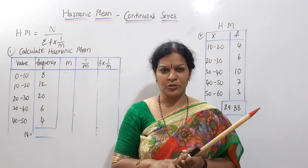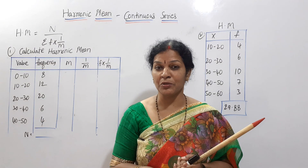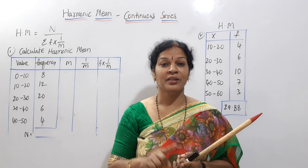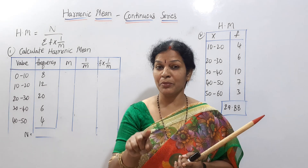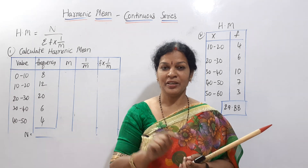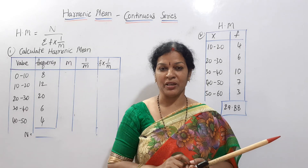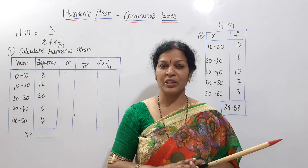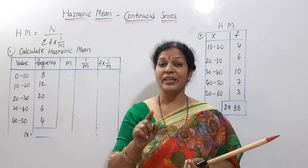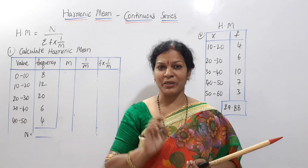In the individual series, the harmonic mean formula is equal to n by sigma 1 by x. In the discrete series, the harmonic mean is equal to n by sigma f into 1 by x.